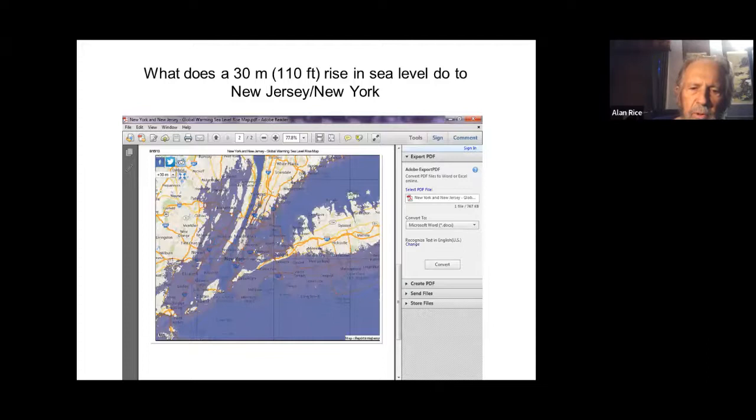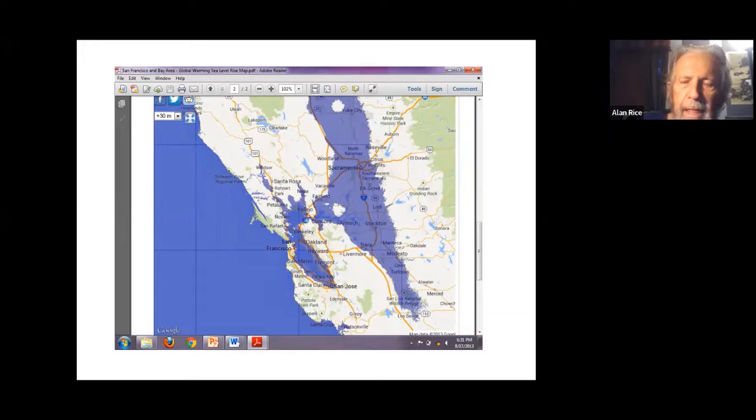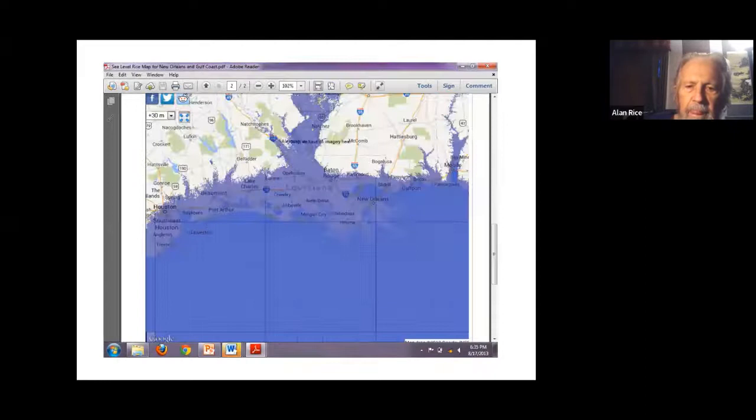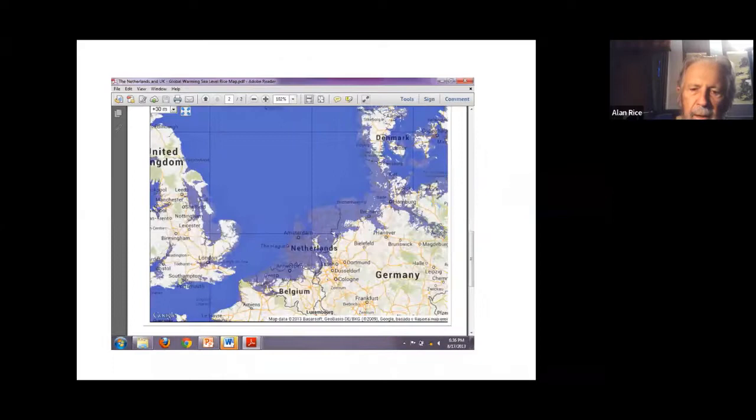This is what it will do to New Jersey, New York. You can see the Hudson River running up. Brooklyn's drowned and a number of other situations. Florida's in even worse shape. California Central Valley is ruined, and that's a major agricultural production area, which would hit the whole world—nothing but salt in there. That's the delta for New Orleans, swamped.